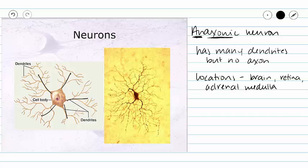Often, they serve as neurosecretory cells. For example, in our adrenal medulla, when these cells are stimulated, they release epinephrine and norepinephrine into our bloodstream.